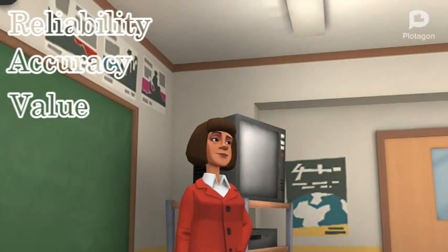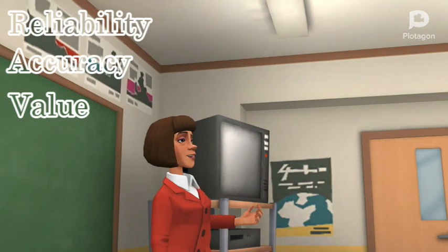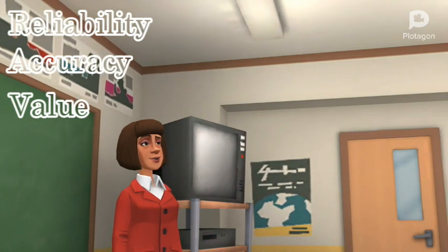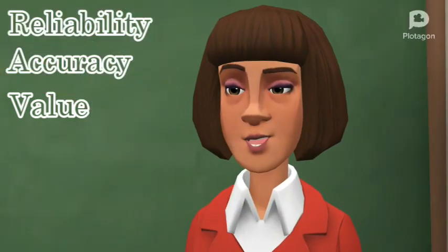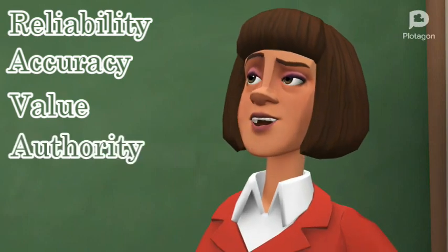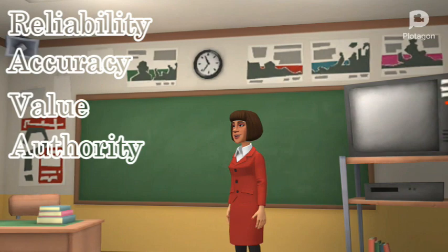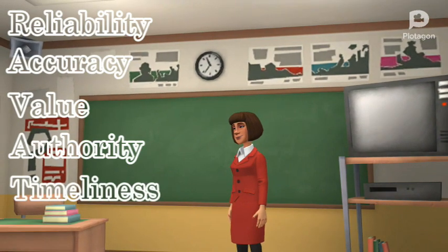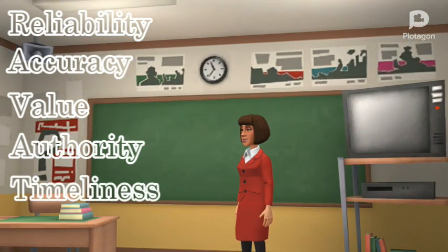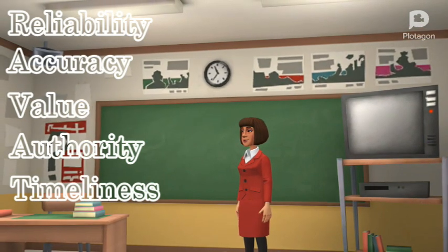The third one is value — information is said to be of value if it helps the user in making decisions. The fourth one is authority: is the publisher or author credible enough? The fifth and last one is timing. The accuracy, value, and reliability of the information may vary as time passes by.